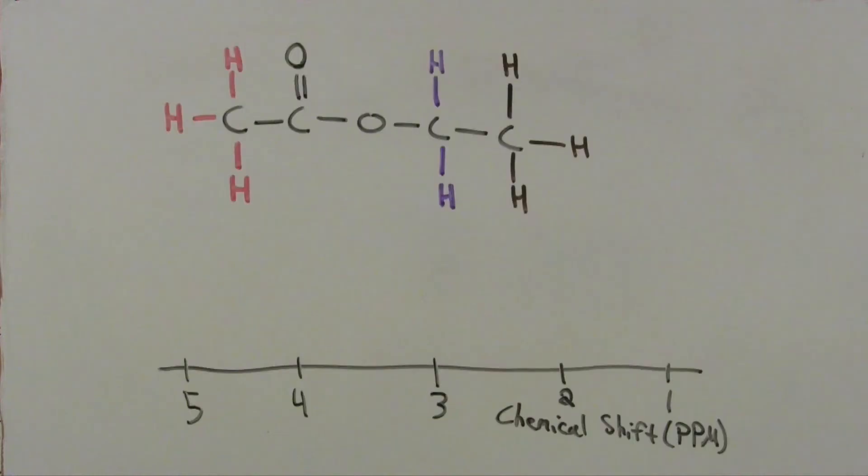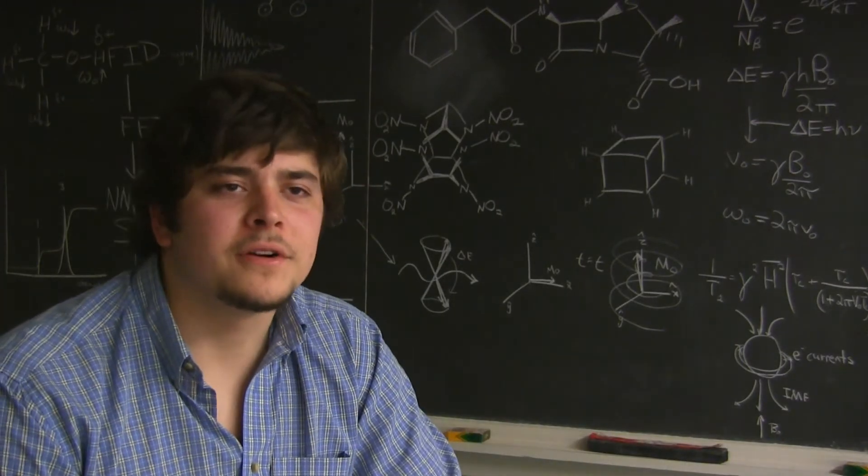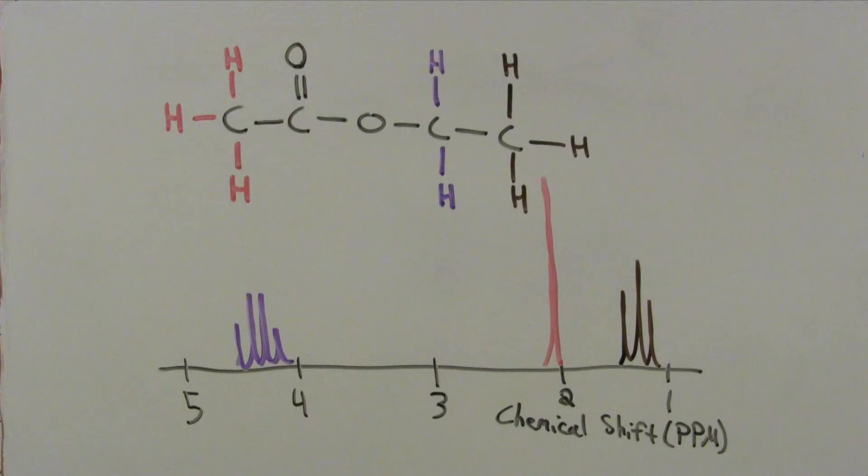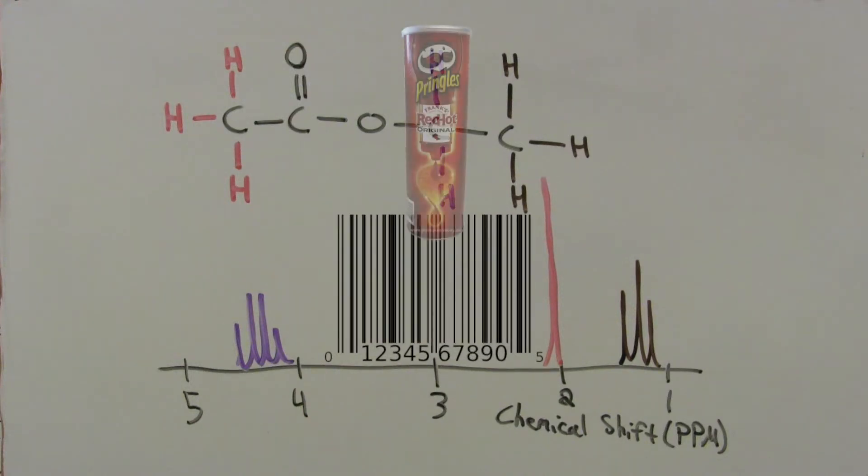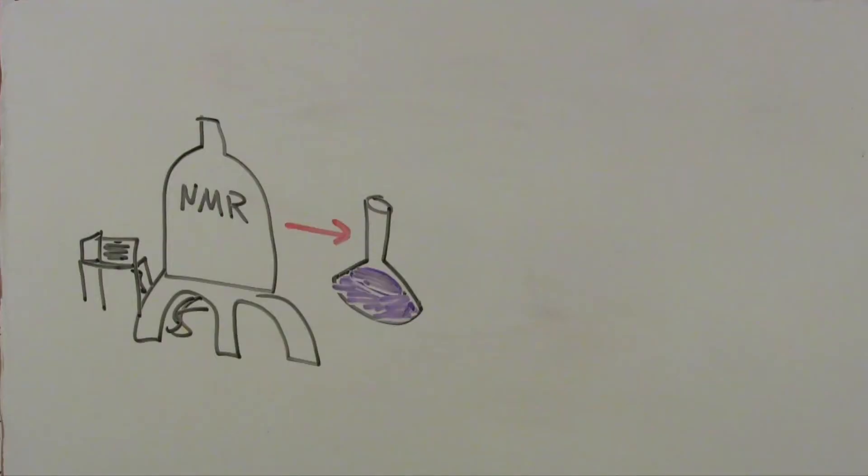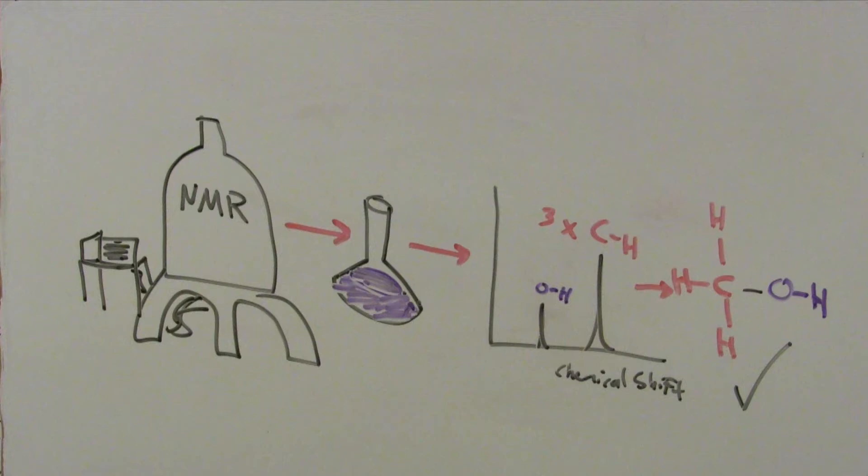Since every compound has a unique set of bonds, every compound has a unique NMR spectrum, a graph showing those bonds. You can think of the NMR spectrum as a barcode to the compound, like the barcode for a product in a grocery store. If we can run an NMR spectrum on our sample, we should be able to obtain this barcode and identify this compound.